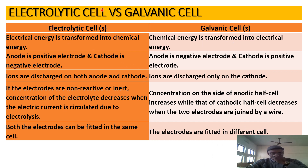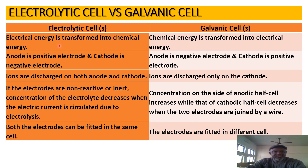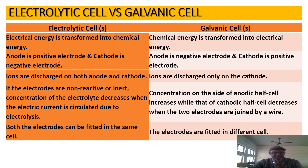Now let's compare electrolytic versus galvanic cells. For electrolytic cells, electrical energy is transformed into chemical energy, whereas for galvanic cells, chemical energy is transformed into electrical energy. In electrolytic cells, the anode is positive and the cathode is negative. In galvanic cells, the anode is negative and the cathode is positive. In electrolytic cells, ions are discharged at both the anode and cathode, while in galvanic cells, ions are discharged only at the cathode.